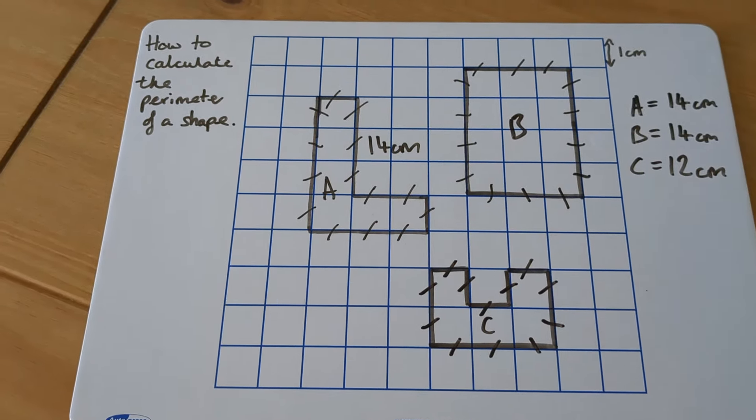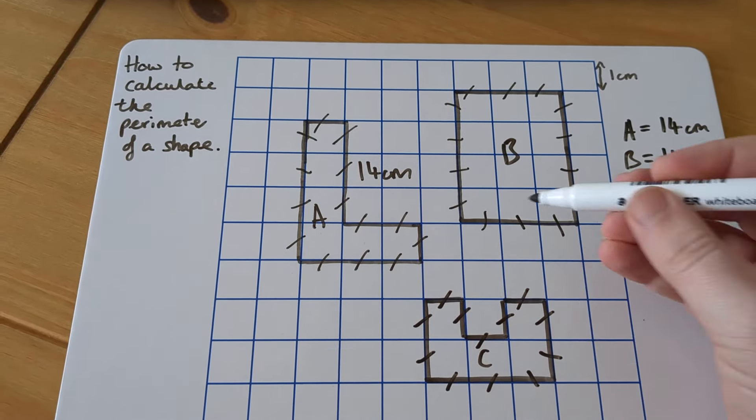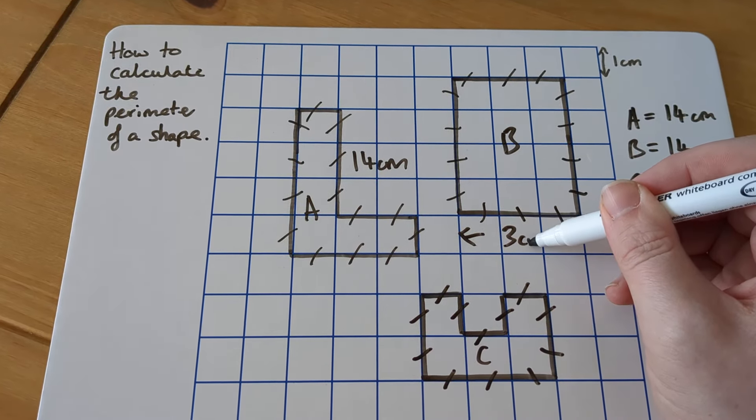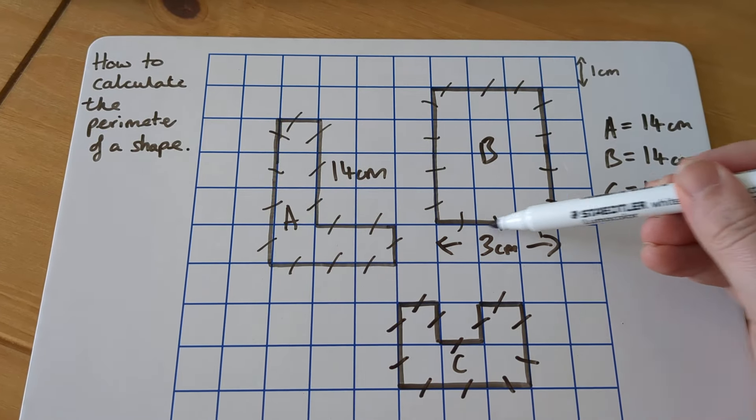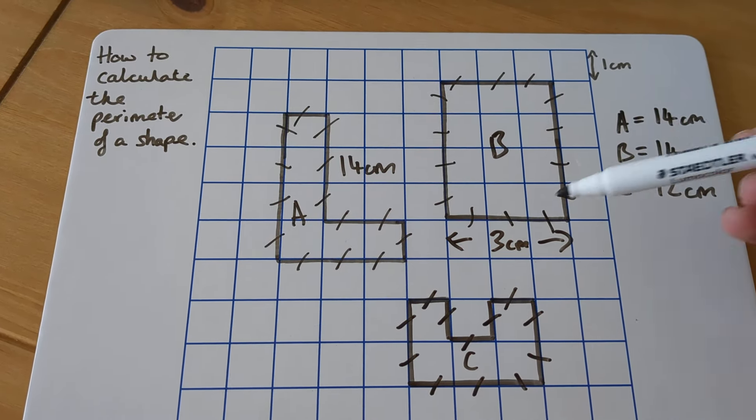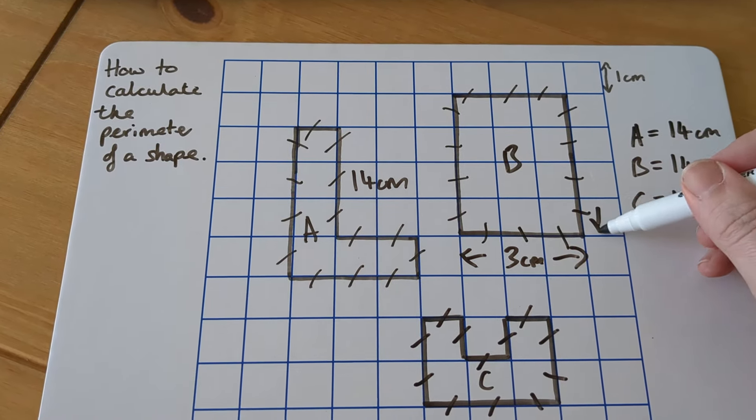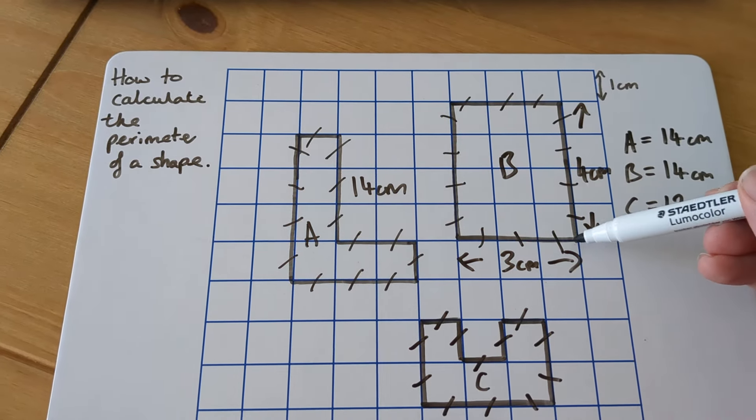And that is a really easy way of doing perimeter. Eventually, we'll have labels on this. So it would say things like this bit here is 3 centimeters. So we won't need to count all the squares because they won't be there. But if we know this is 3 centimeters and up here is 4 centimeters, we can say, well, that's 3,